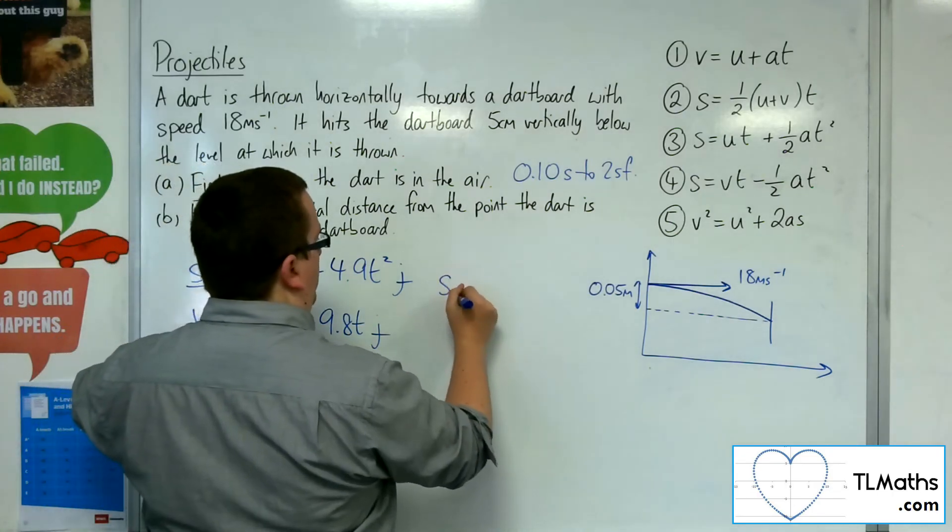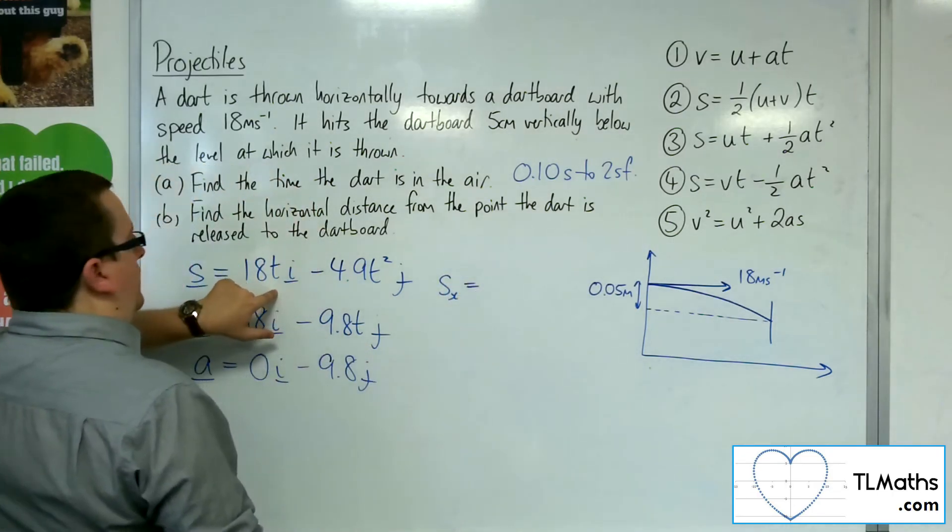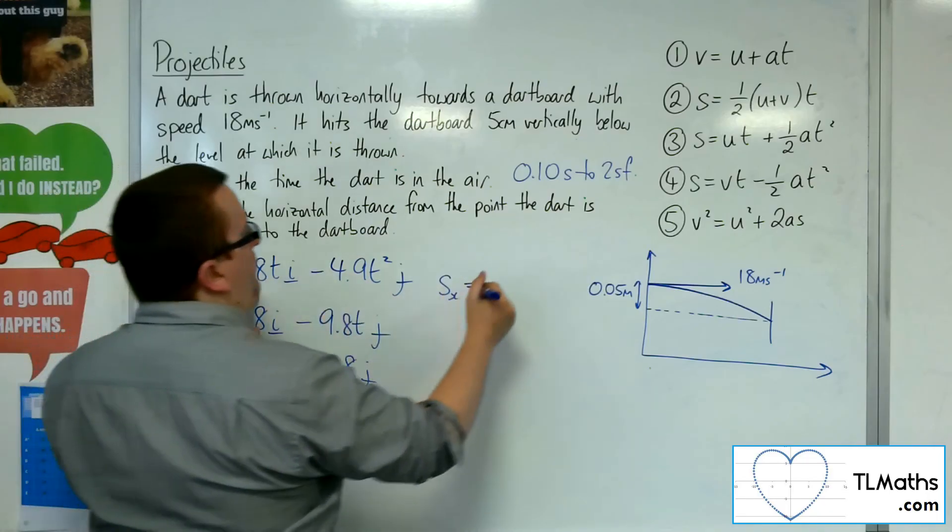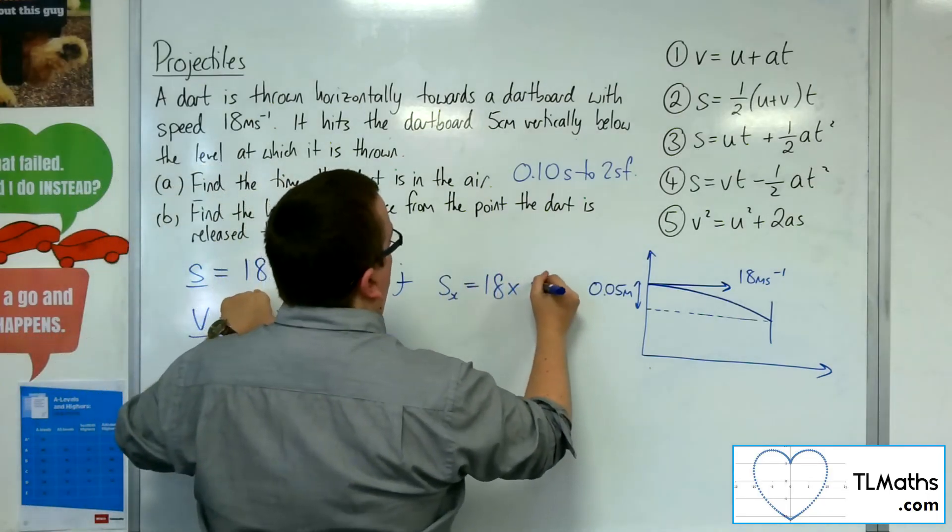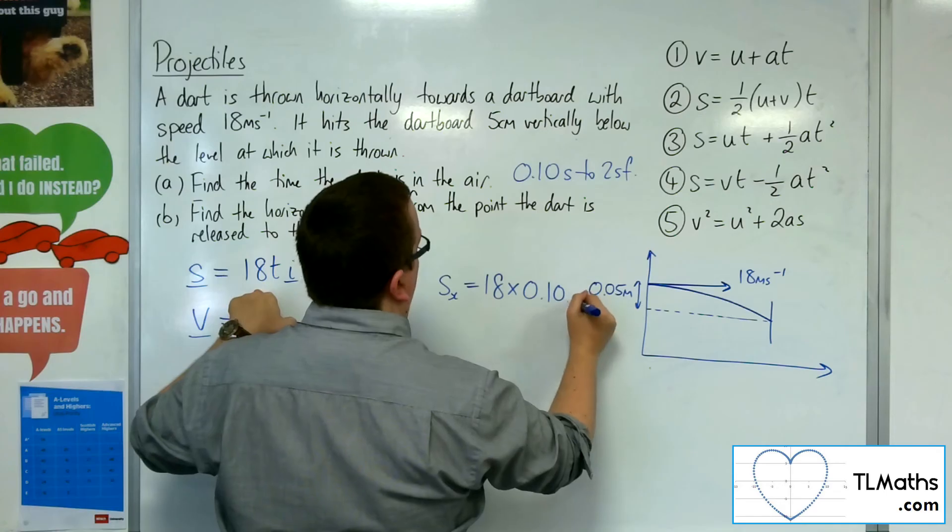So the horizontal displacement is just 18 times t. So 18 times the 0.10, et cetera.